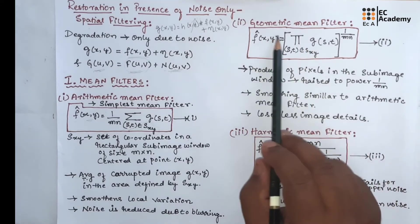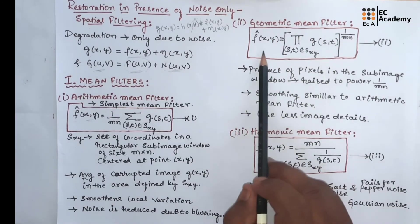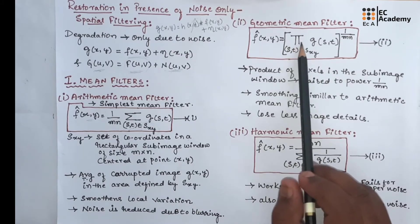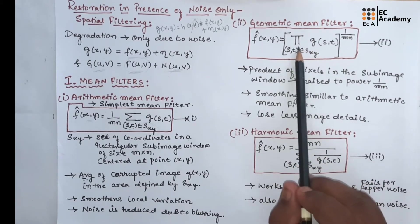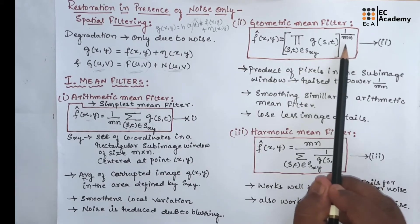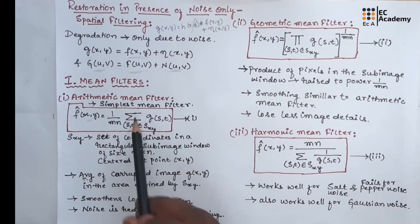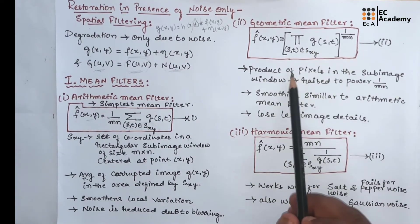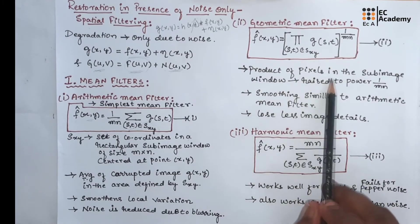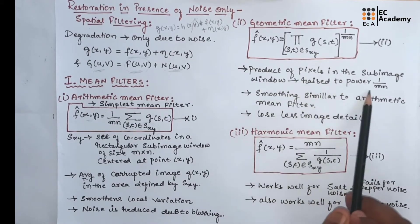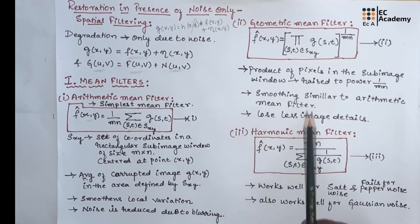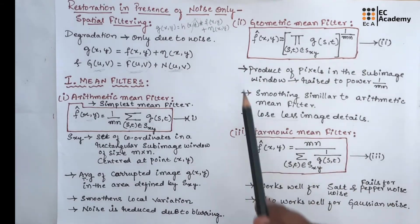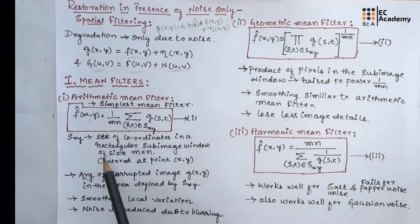The second type of mean filter is geometric mean filter. The operation of geometric mean filter can be represented here as F(x,y) is equal to - here, the symbol pi is written. This represents multiplication or product. So, it is the product of G(s,t) to the power of 1/(m×N). Here, summation represents addition and pi represents product or multiplication. Each restored pixel is given by the product of pixels in the subimage window that is raised to the power of 1/mn. The geometric mean filter achieves smoothing similar to mean filter, but it tends to lose image details. So, here the image details will be lost compared to the arithmetic mean filter.